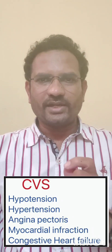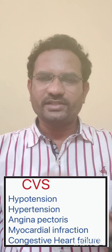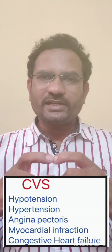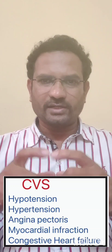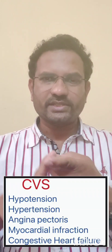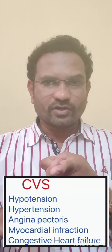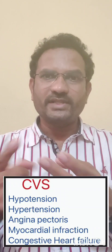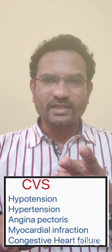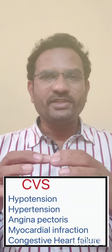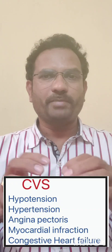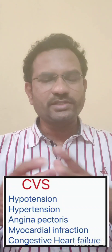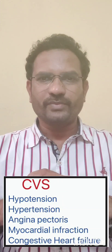The first unit is about the cardiovascular system. Physiology related to the heart means: what is cardiac output, what is stroke volume, what is the cardiac cycle, what do you mean by systemic circulation, what do you mean by pulmonary circulation — all these things you need to go through.